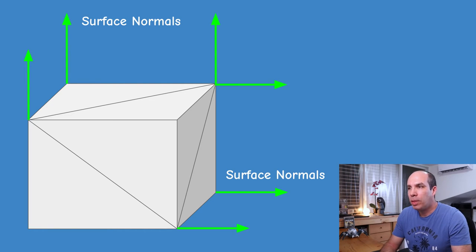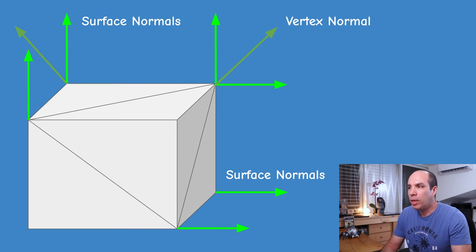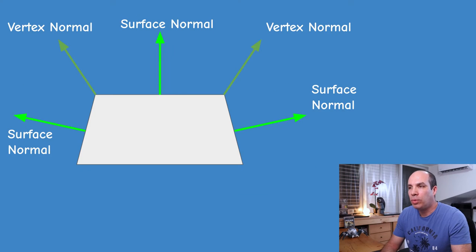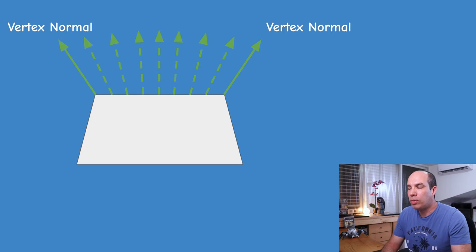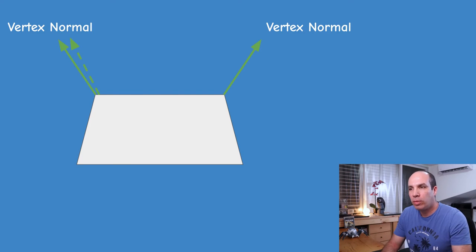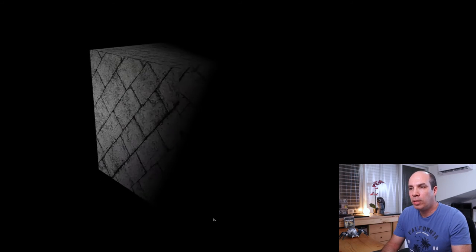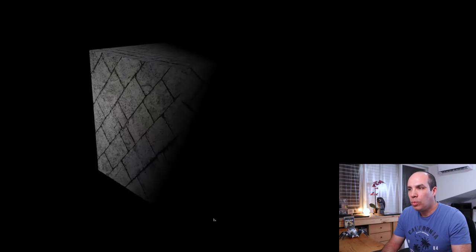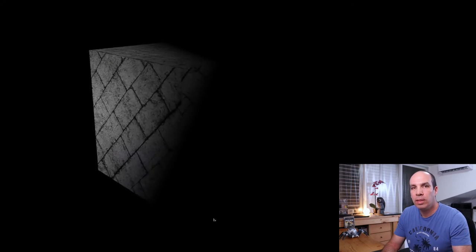The solution is to replace the triangle normal with a vertex normal. A vertex normal is the average of all the normals of triangles that share that vertex. If we attach a vertex normal as a new vertex attribute and let the rasterizer interpolate it across the triangle face, we get a slightly different normal per pixel. Pixels in the middle of the triangle get a normal roughly equal to the average of the three vertex normals, and pixels close to a vertex get a normal close to that vertex's normal.